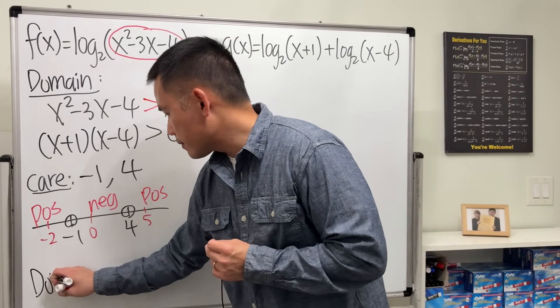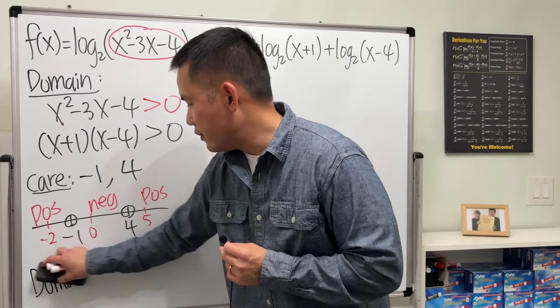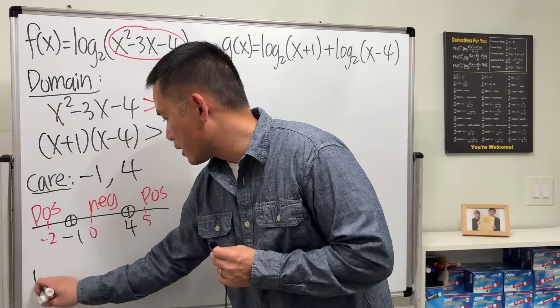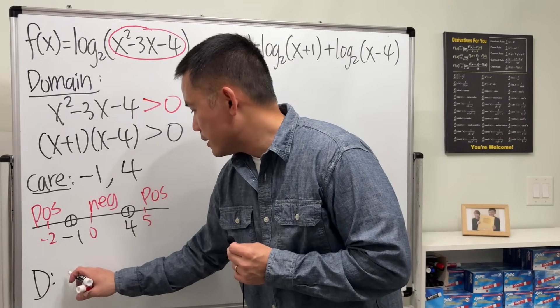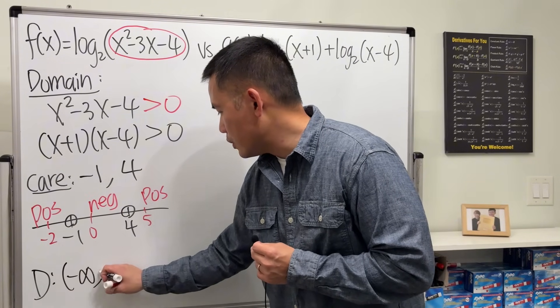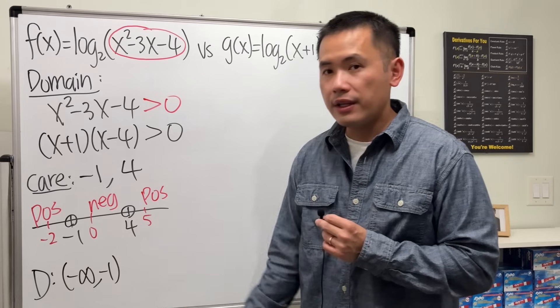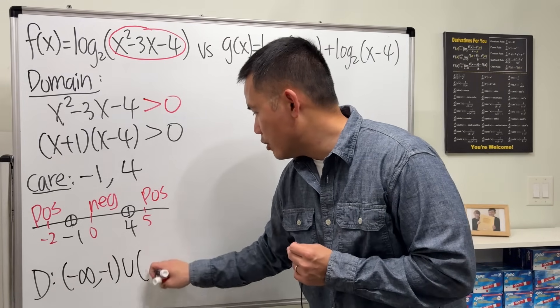So the domain, I'll just write down D for the domain, is I will go from negative infinity to negative 1, do not include the negative 1 though, and then union 4 to infinity.